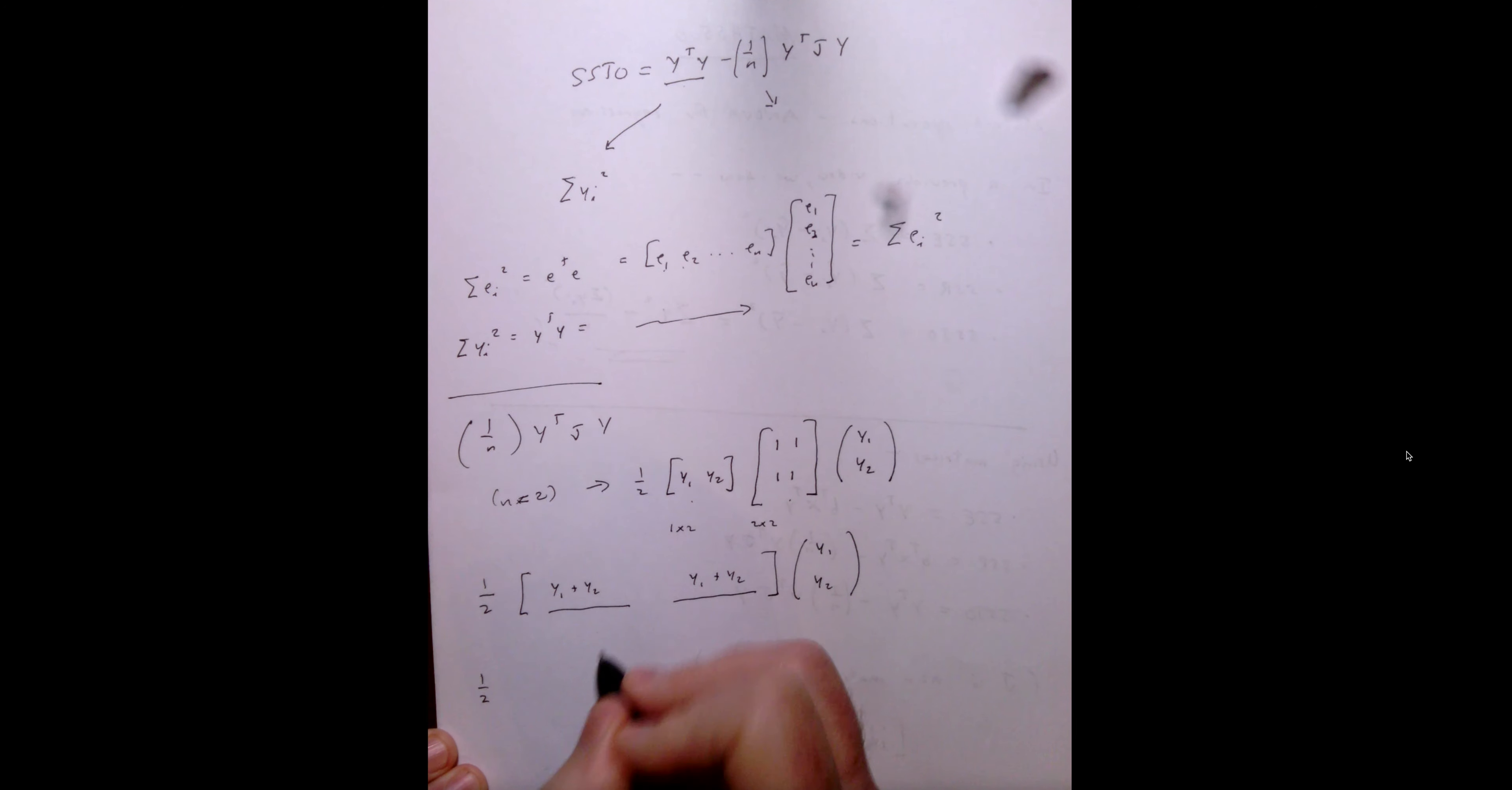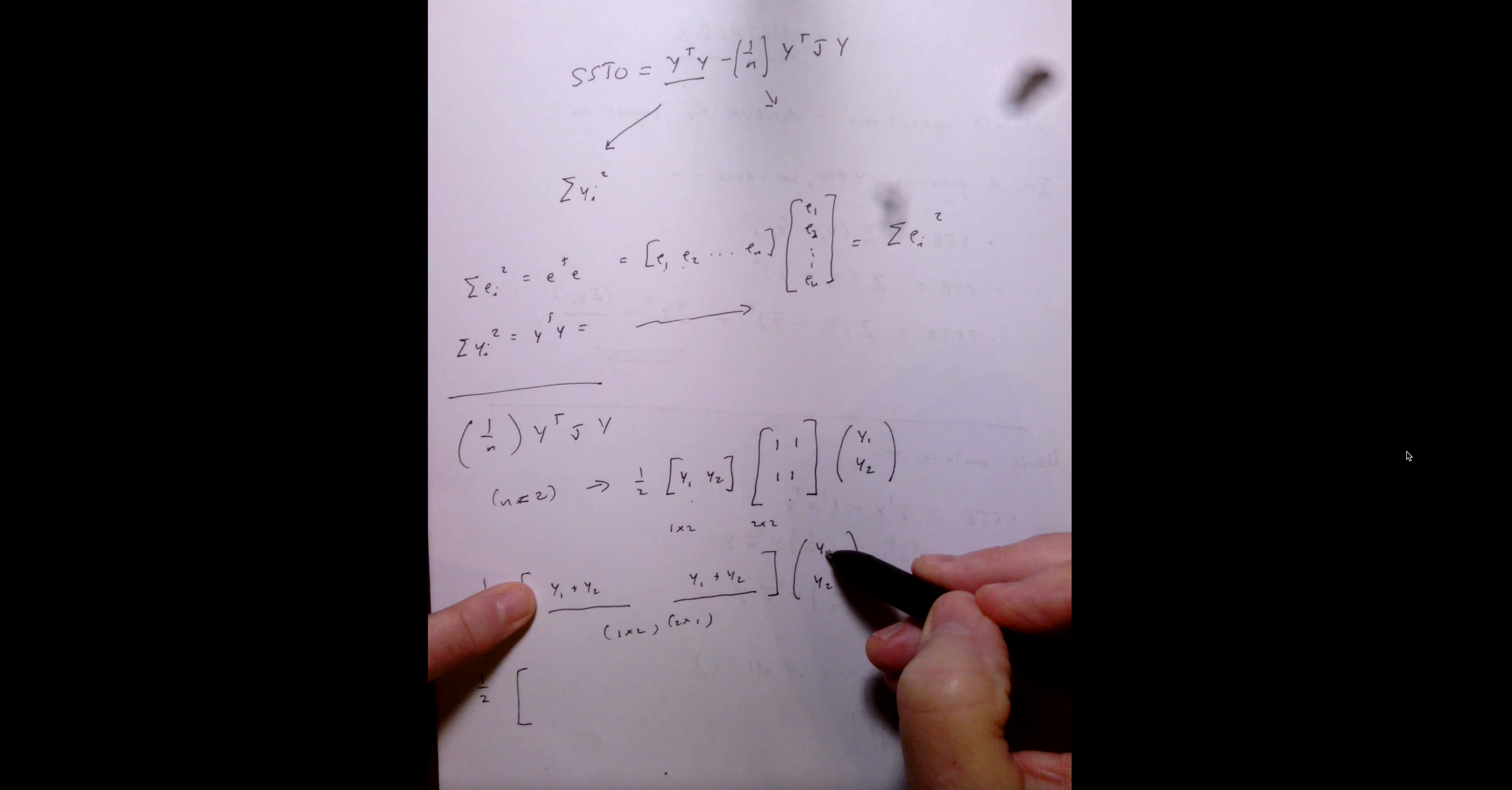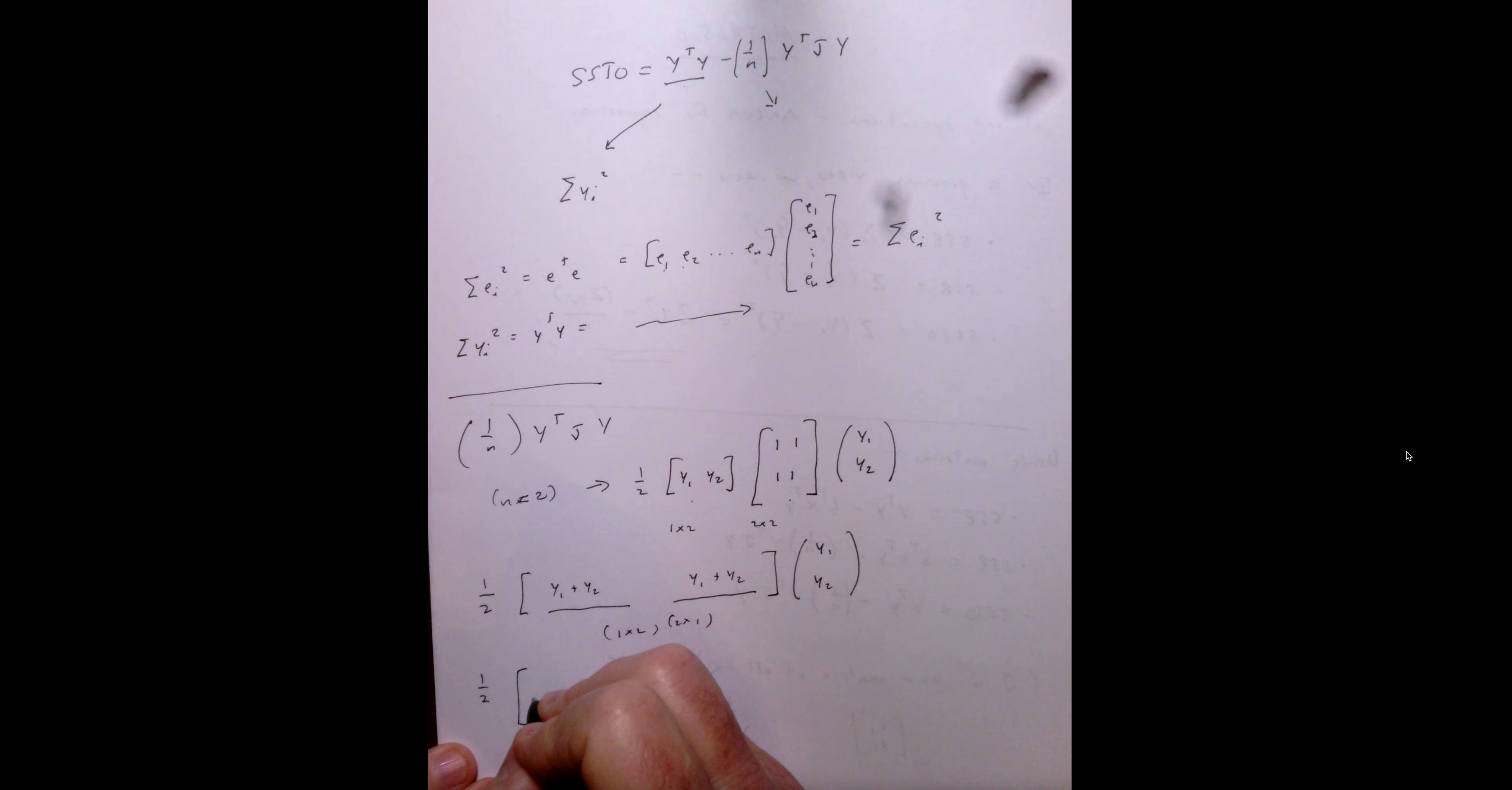Now, just taking a look at this, so we have a 1 by 2, and we have a 2 by 1, so this is just going to give us a 1 by 1. So, taking a linear combination, we get y1 times y1 plus y2, plus y2 times... which, of course, is just the sum of the yi's over n.